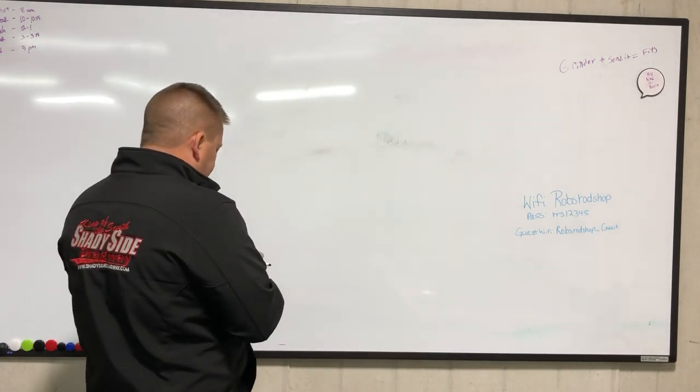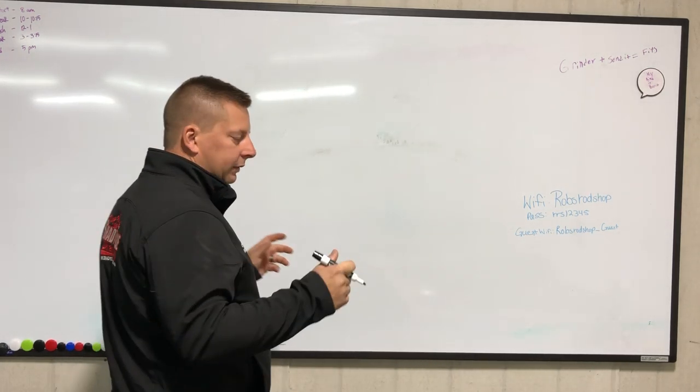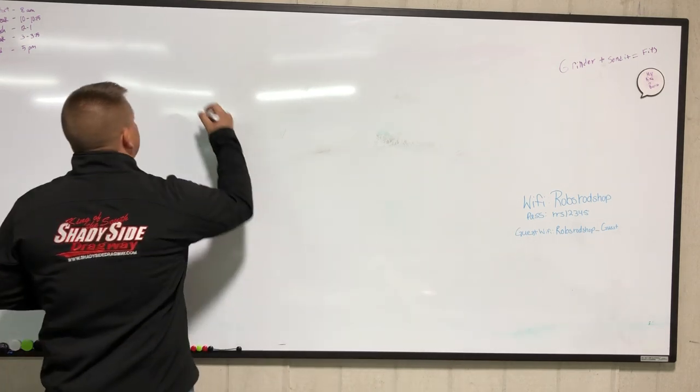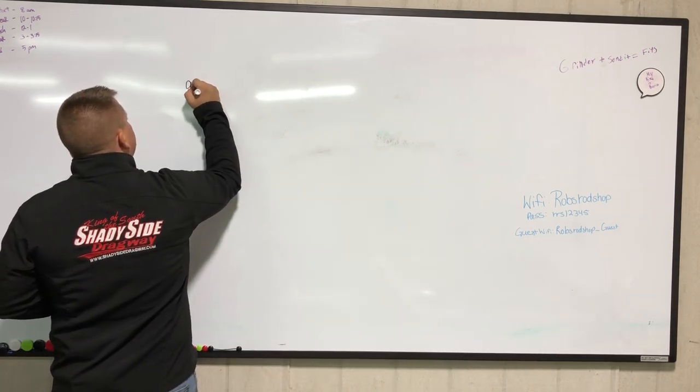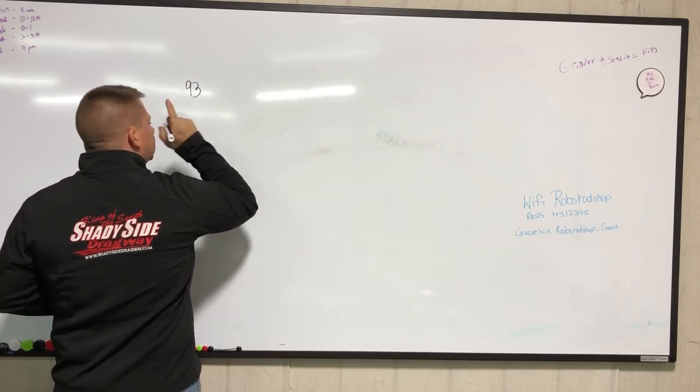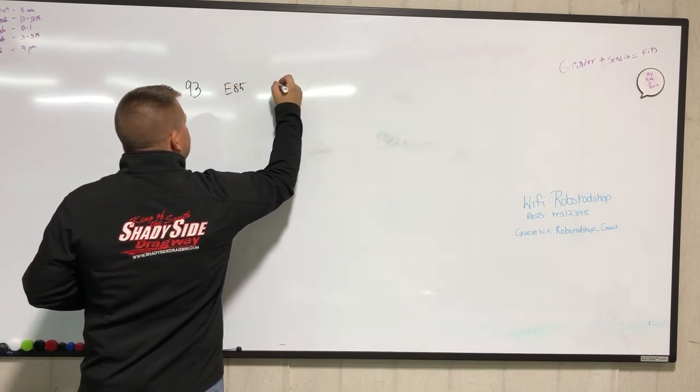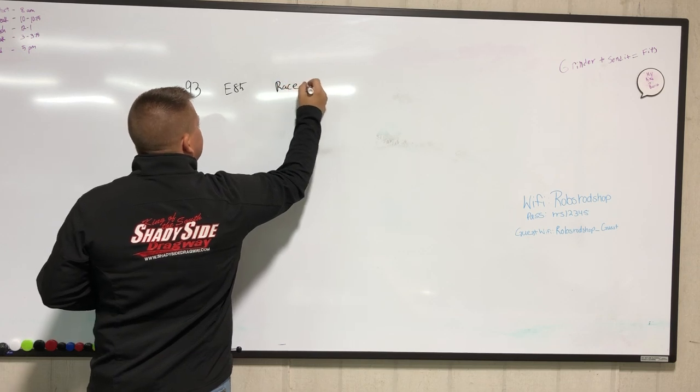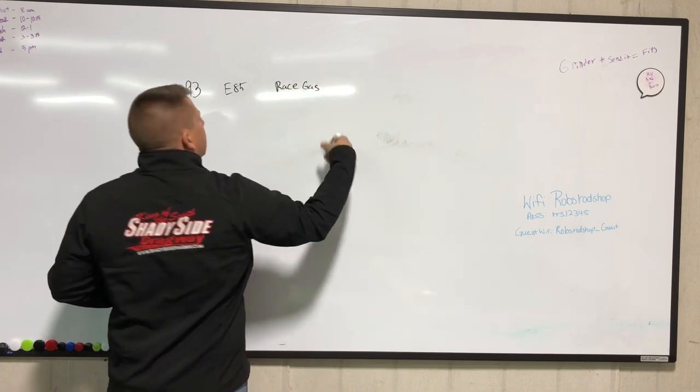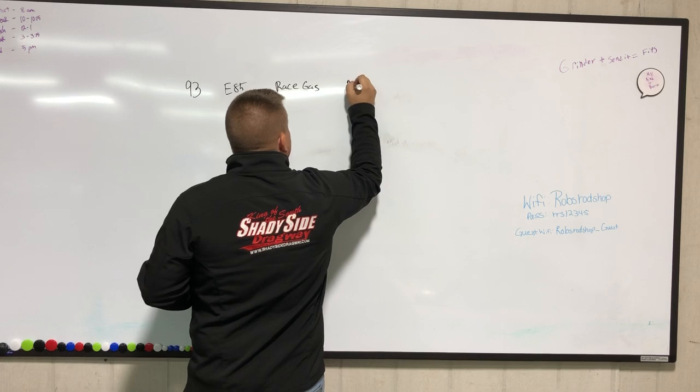So this morning I want to talk about fuel tuning and I want to start with the different types of fuel. We have a regular 93 octane pump gas, followed by E85, followed by any type of race gas, followed by methanol, we'll just call it M1.